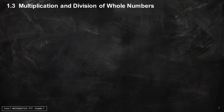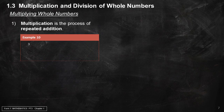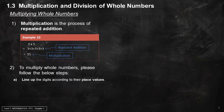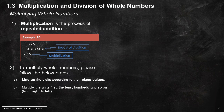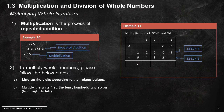Section 1.3: Multiplication and Division of Whole Numbers. Multiplying whole numbers: multiplication is the process of repeated addition. Example 10: 3 × 5 equals 3 + 3 + 3 + 3 + 3 = 15. To multiply whole numbers: A) Line up the digits according to their place values. B) Multiply the units first, then the tens, hundreds, and so on, from right to left. Example 11: multiplication of 3,241 and 24 equals 77,784.